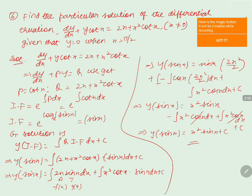To find the particular solution, substitute x = π/2 and y = 0 into the equation. We get c = −π²/4. Substituting back, the particular solution is y·sin(x) = x²·sin(x) − π²/4.